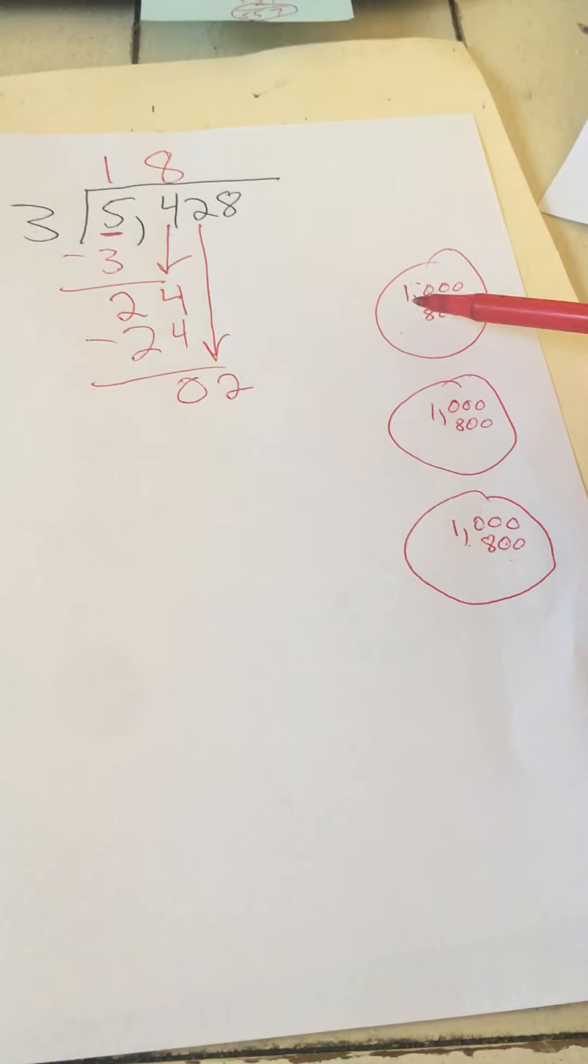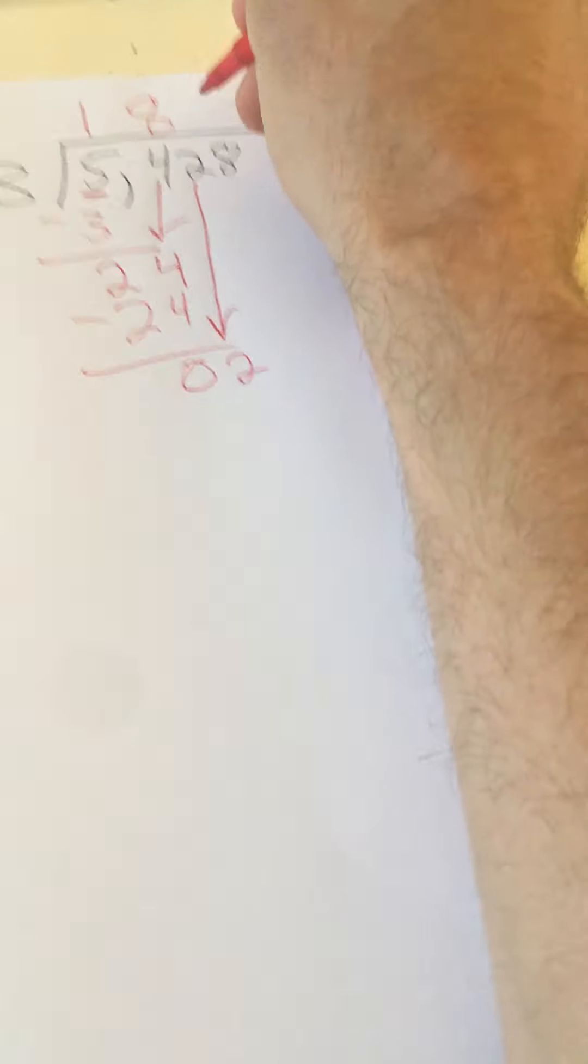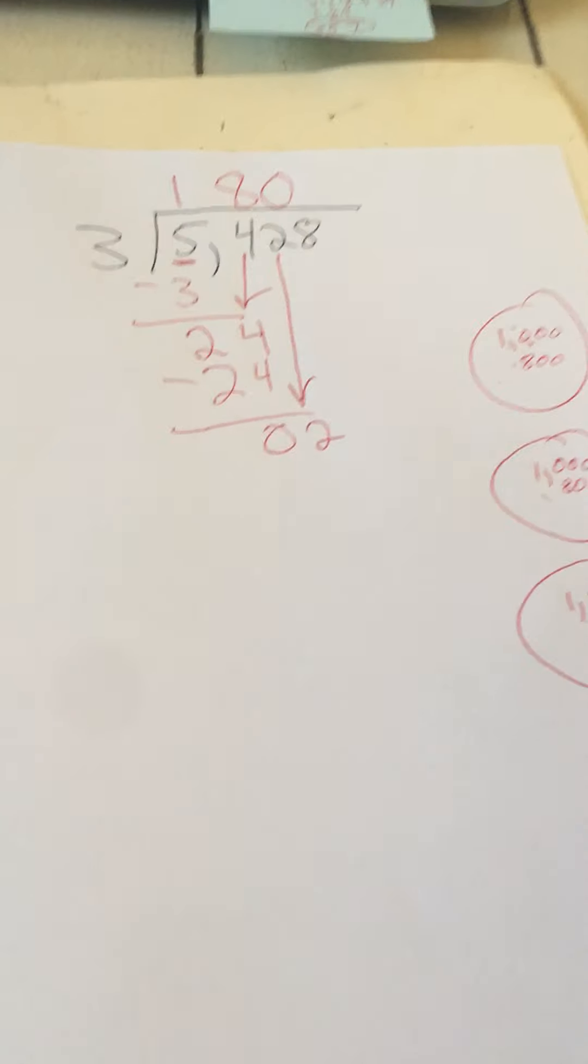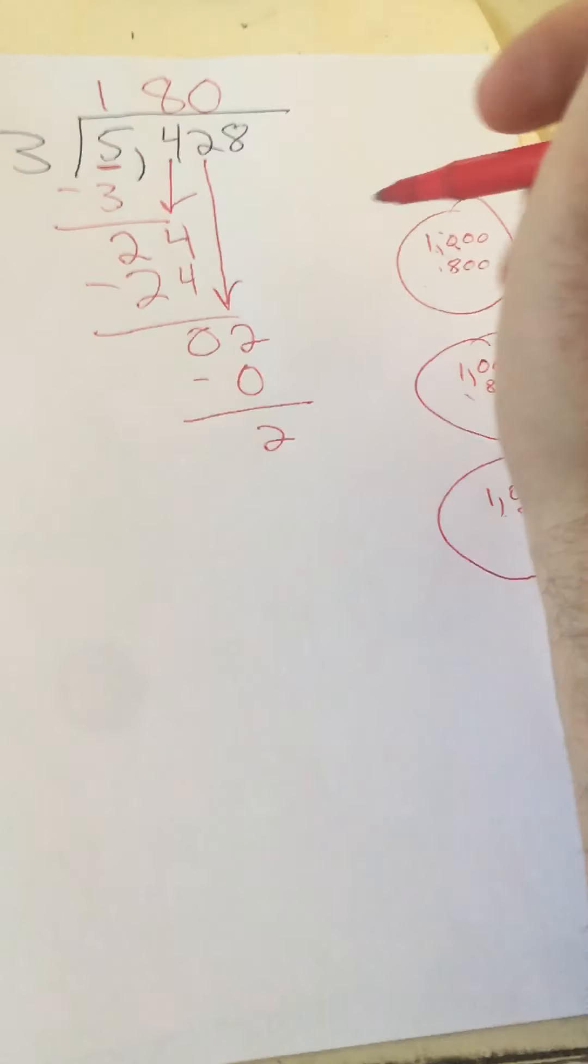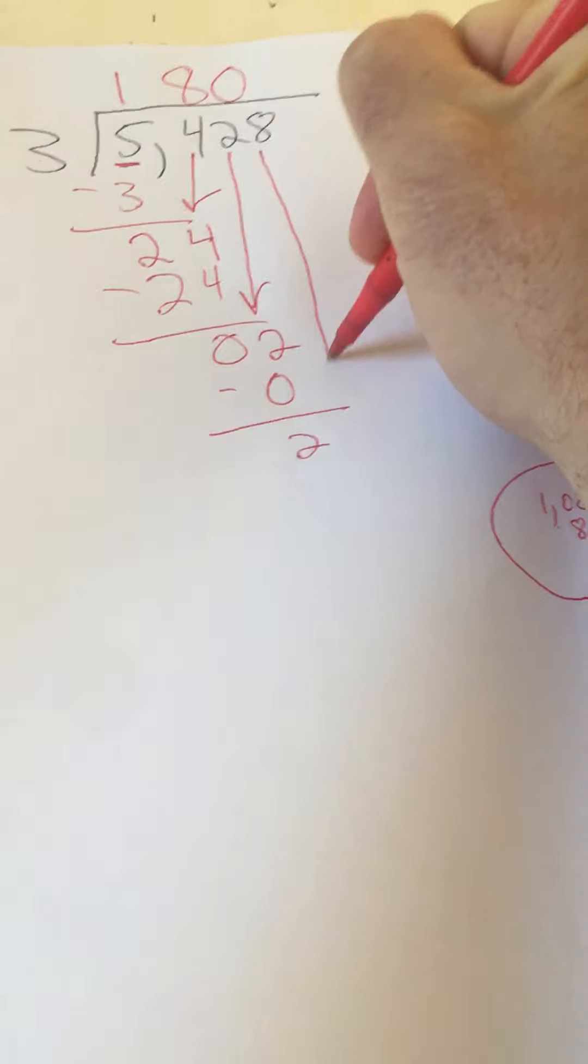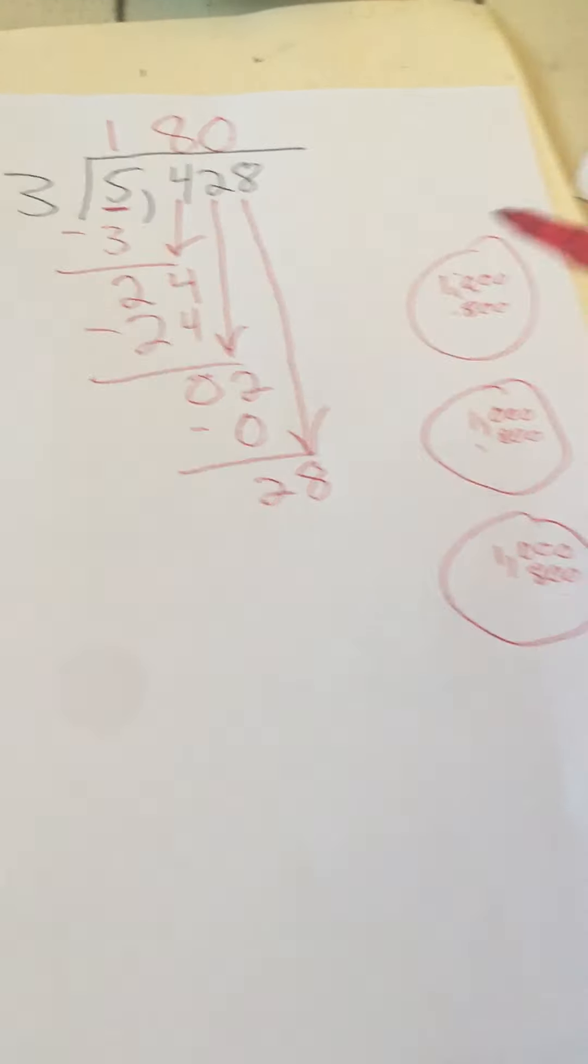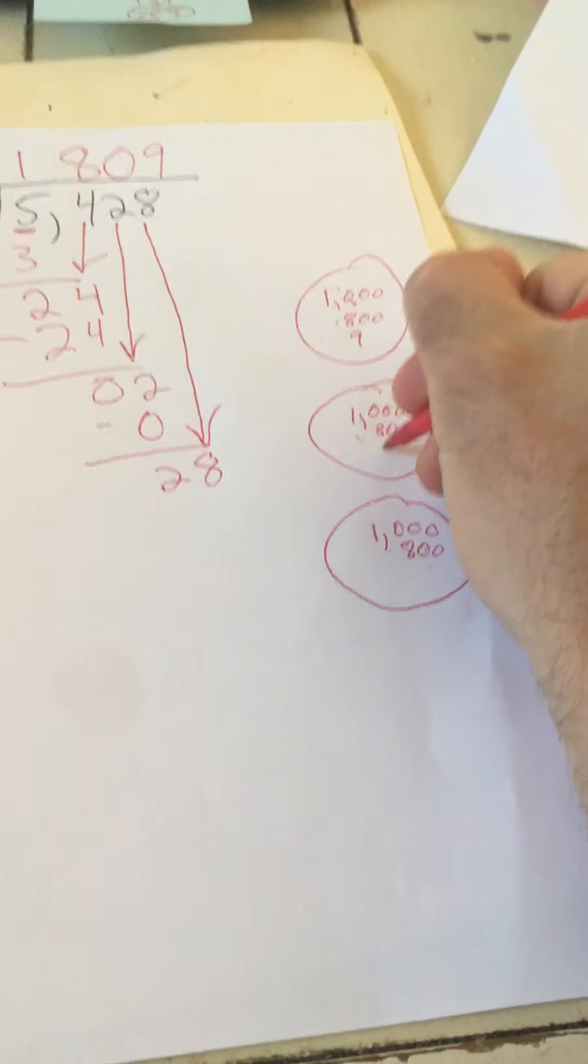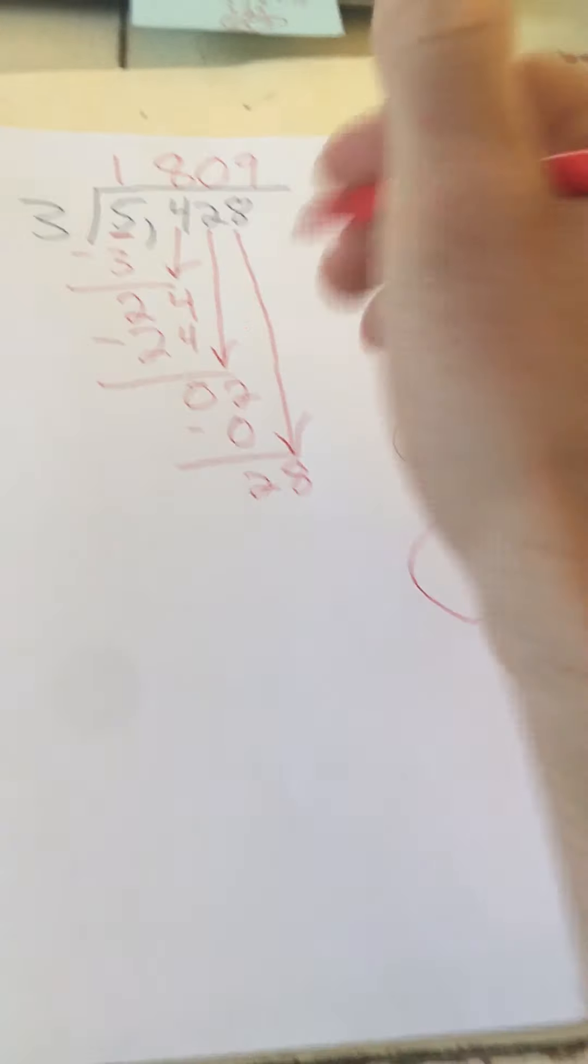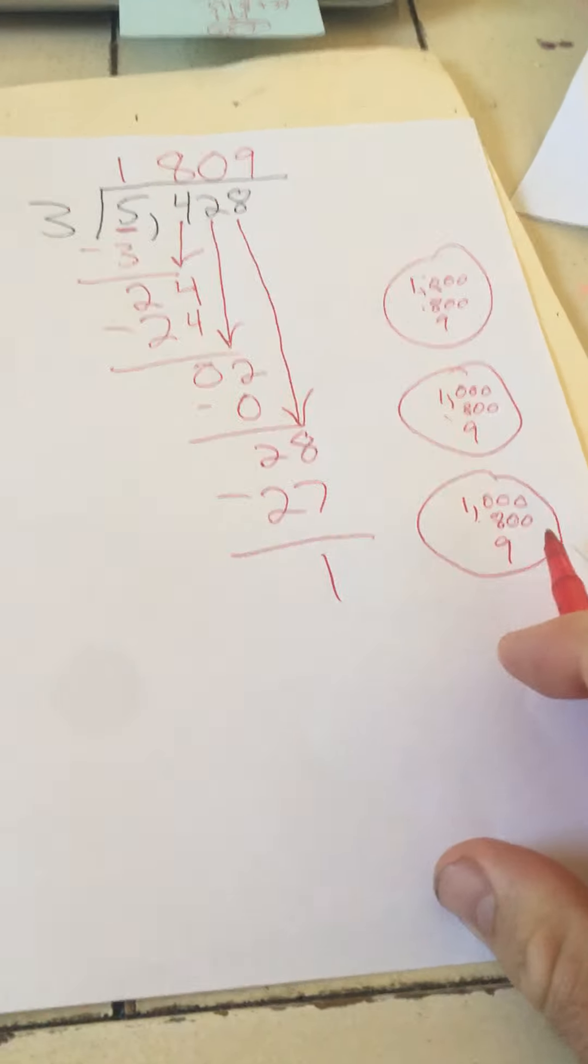So if we had two tens, you can't put one into each group because then they wouldn't be equal groups. So we can't put any of those tens yet into those three groups. We subtract. We still have two tens left because we didn't use them. Now we're bringing down the eight ones. We have 28 ones. If we're going to split those into three groups, we can put nine into each group. And that's 27. So we still have one left over.